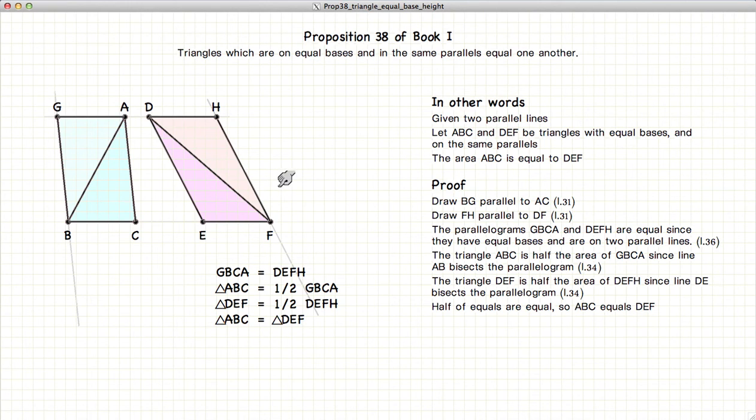And since half of equals are also equal, we have that these two triangles are equal in area.